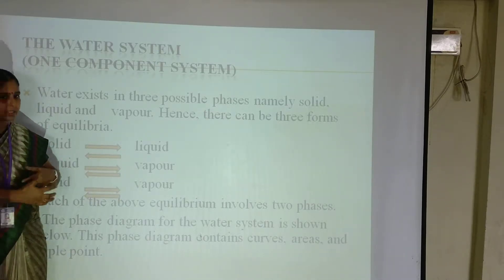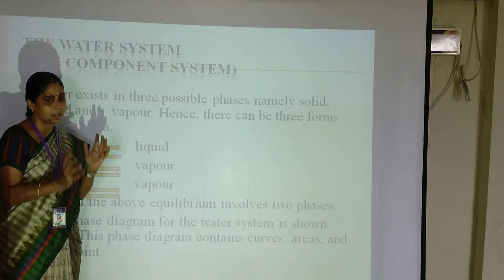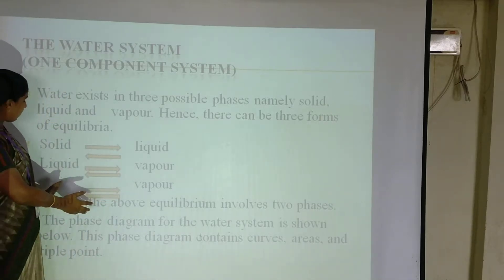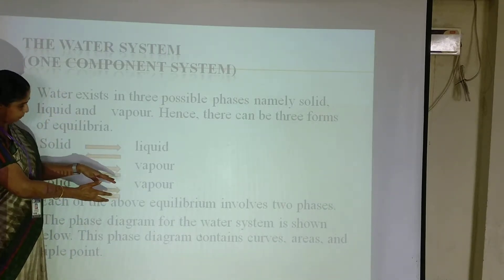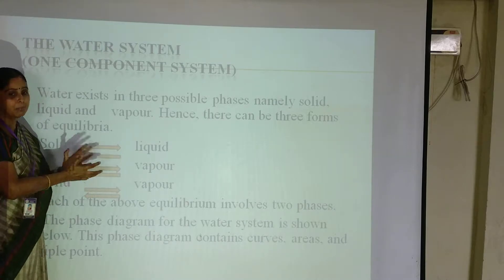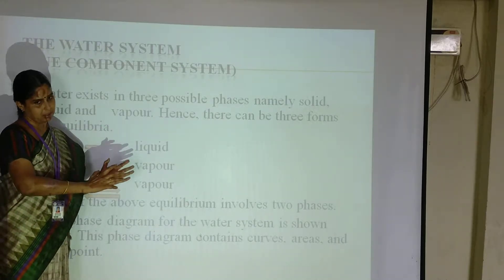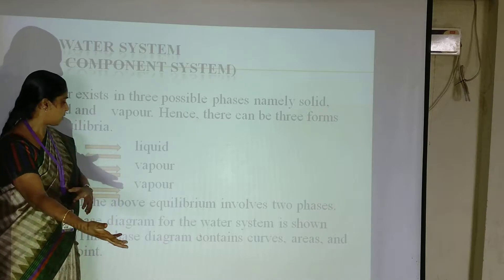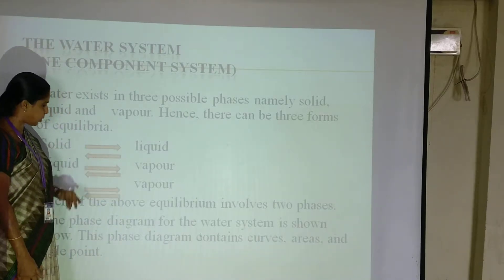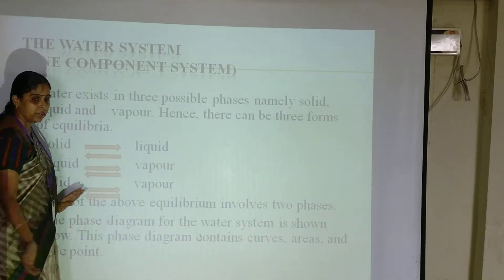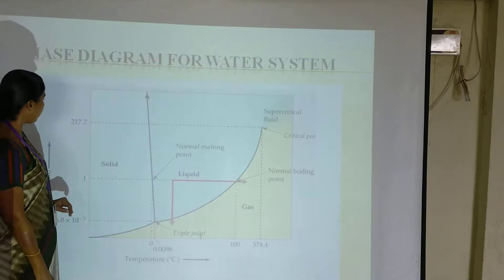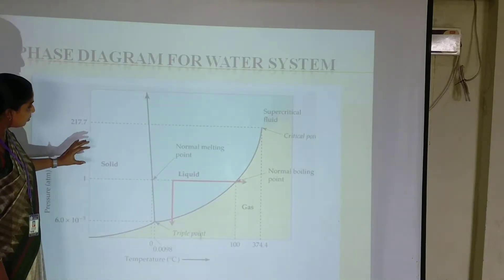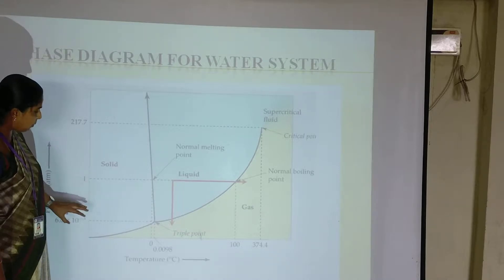That is how much liquid is converted into vapor — that is the meaning. There is an equilibrium between liquid and vapor. Similarly, in sublimation, the solid is converted into the vapor state. This is called sublimation. So this is the phase diagram for the one-component system.